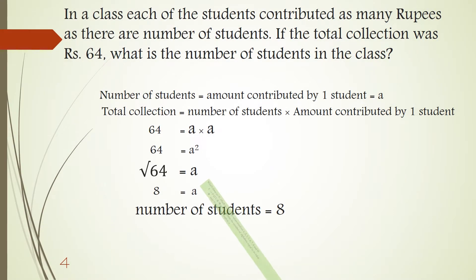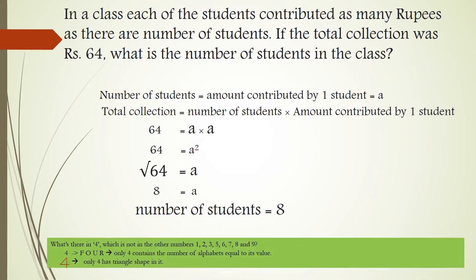The question I asked in the last video is: what is special about 4 that is not in the numbers 1, 2, 3, 5, 6, 7, and 9? The answer is that 4 has four alphabets. Only 4 has the number of alphabets equal to its value.